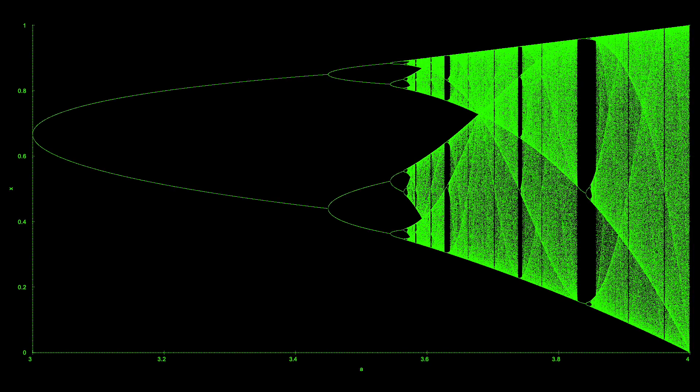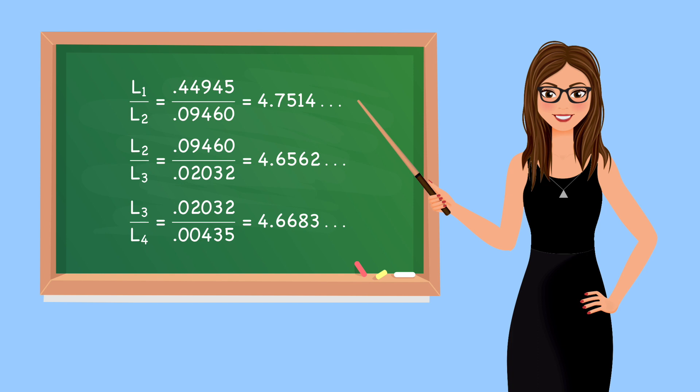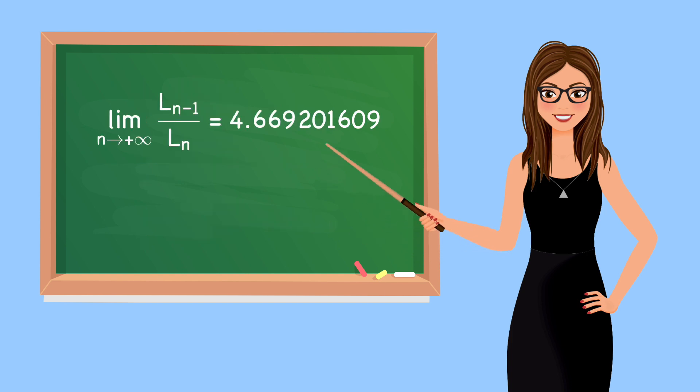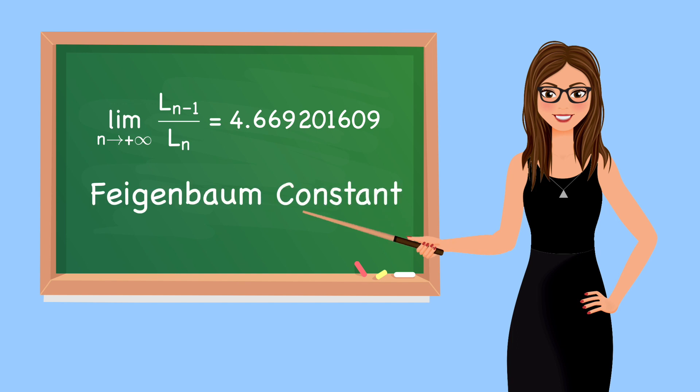Let's zoom back out and look in more detail at the period doubling and onset of chaos. As we noted earlier, the interval between period doublings gets shorter and shorter. If we look at the ratios between interval values, they are diminishing at a nearly proportional rate. If we take the limit of these ratios, we arrive at a very specific number: the Feigenbaum constant. The constant is named for physicist Mitchell J. Feigenbaum, who discovered it while analyzing the logistic map and showed that it applies to all systems that approach chaos via period doubling.